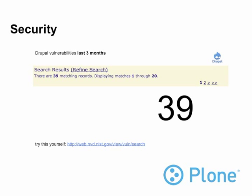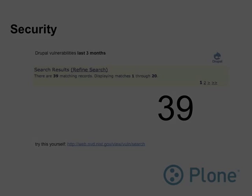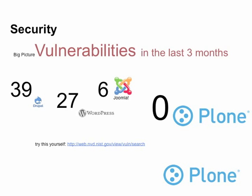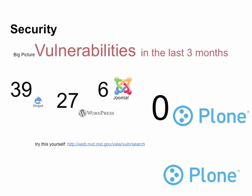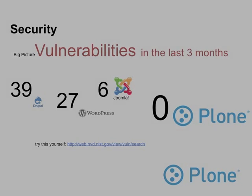I know this is unfair, and Ron will have a chance to defend himself. These are known holes, bugs, and stuff like that. Here's a big picture of the last three months in terms of vulnerabilities for all systems: Drupal 39, WordPress 27, Joomla 6, Plone zero — last three months. Plone is secure by design.